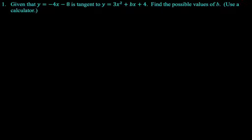So, given that y equals negative 4x minus 8 is tangent to y equals 3x squared plus bx plus 4, find the possible values of b, use a calculator. When I think of this, I think the tangent line must intersect the function, which means that negative 4x minus 8 must be equal to 3x squared plus bx plus 4 at some value.